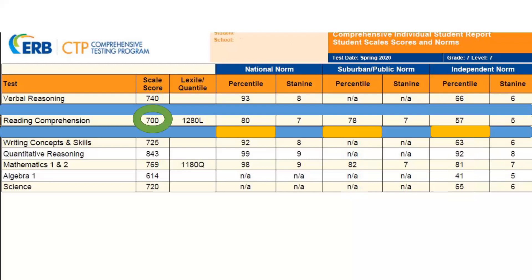Each of these scores are for the same subtest: reading comprehension. This student's scale score is 700 in reading comprehension. The percentile difference in each norm group — 80, 78, and 57 — is based on the group of students we are comparing this student's scale score to.